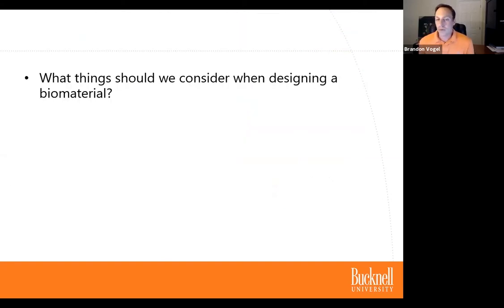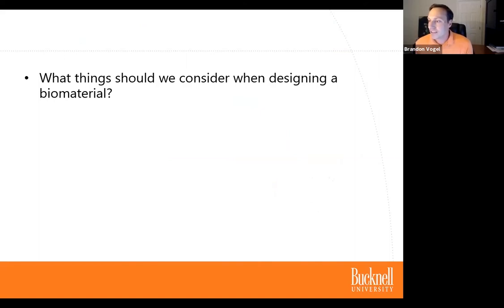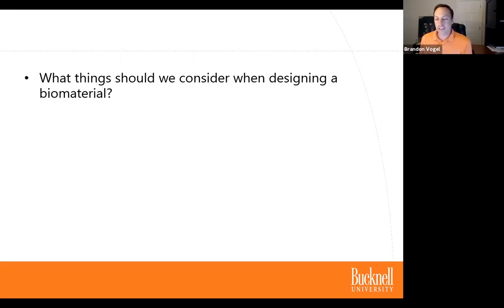What should we consider when designing a biomaterial? The way the body reacts, safety, how useful it is, durability, effect on the body, how it interacts chemically. You could imagine if you put something into the body and there was a chemical reaction, or the immune system said 'this shouldn't be here' — your body may want to get rid of it or have an adverse reaction, and we want to avoid that. Other important considerations: size and shape, fewer side effects, intended use, and unintended consequences.